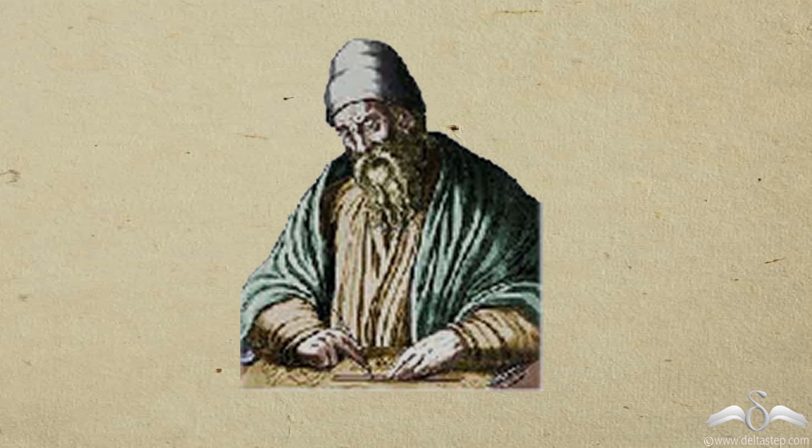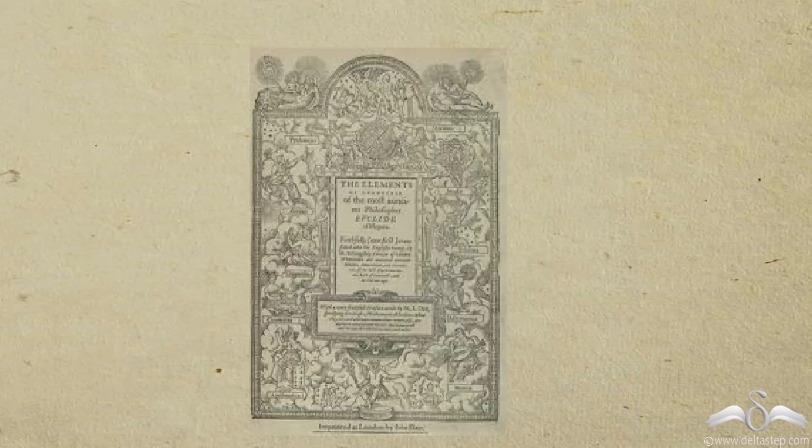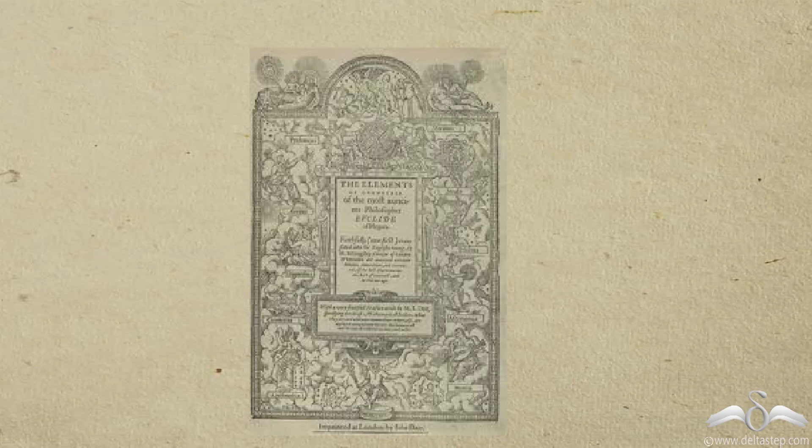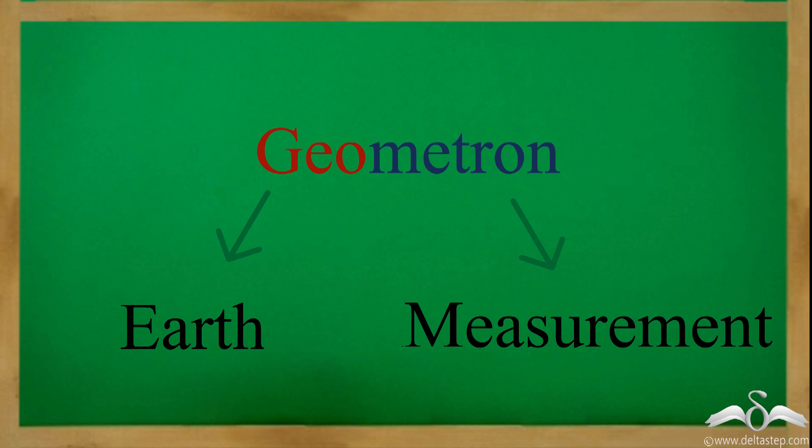Euclid was a Greek mathematician and was known as the father of geometry. In 300 BC, he wrote a book in which he organized and proved all the knowledge of geometry we have till date.